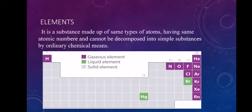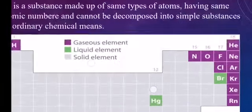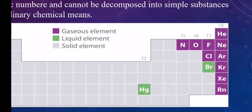The definition of element: it is a substance made up of the same type of atoms, having the same atomic number, and cannot be decomposed into a simpler substance by ordinary chemical means. This definition is most important for short questions. The periodic table shows different colors: gaseous elements in purple color, liquid elements in green, and solid elements in light gray color.